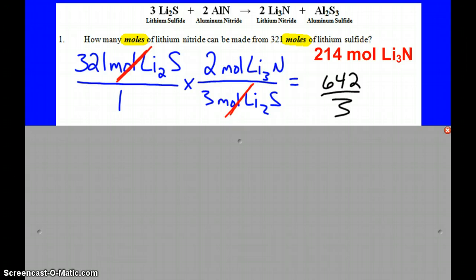So 642 divided by 3, and that's how we get the 214 moles of lithium nitride.